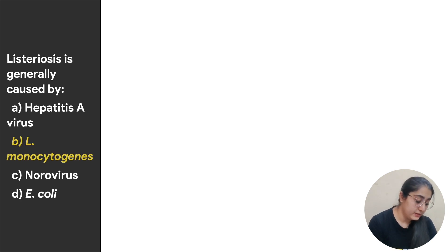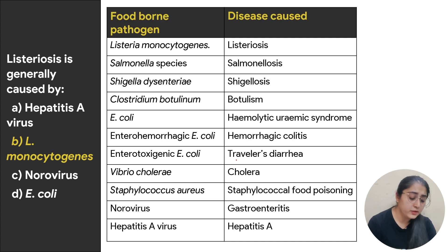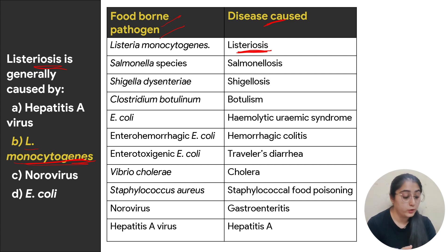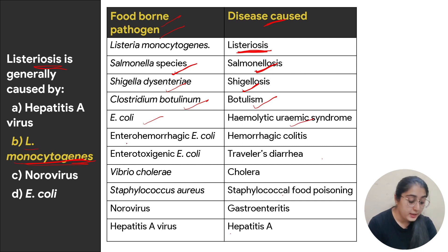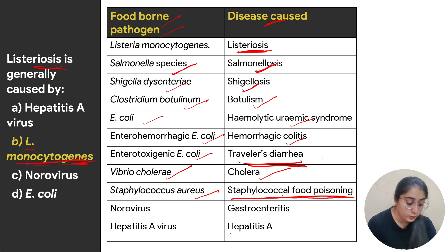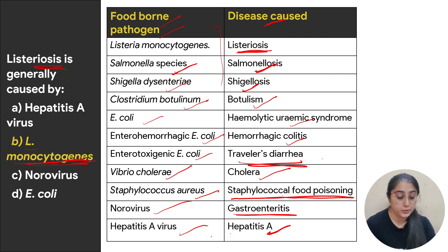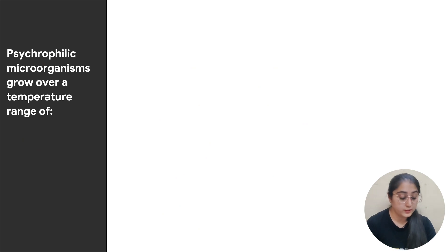Next: listeriosis is generally caused by — options are hepatitis A virus, L. monocytogenes, norovirus, or E. coli. Listeria monocytogenes causes the disease listeriosis, so the correct answer is L. monocytogenes. Other foodborne pathogens include Salmonella causing salmonellosis, Shigella causing shigellosis, Clostridium botulinum causing botulism, E. coli causing hemolytic uremic syndrome, Vibrio cholerae causing cholera, Staphylococcus aureus causing staphylococcal food poisoning, norovirus causing gastroenteritis, and hepatitis A virus causing hepatitis A.